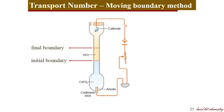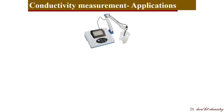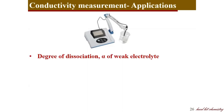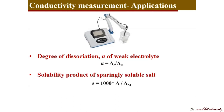Now let us move on to conductivity measurement and its applications — the last part of this session. Conductivity is measured in modern times using a digital conductivity meter. The calibrated instrument has an electrode dipped in the electrolyte analyte, and conductivity is read directly at the display. It is used mainly to find out the dissociation constant α of weak electrolytes, the solubility product of sparingly soluble salts, and the ionic product of water.